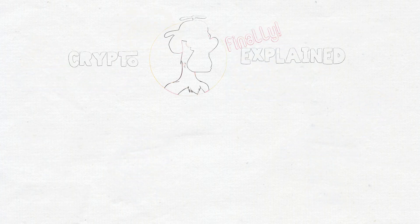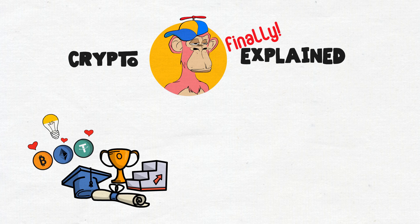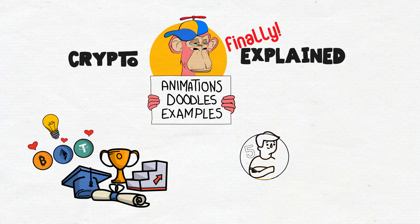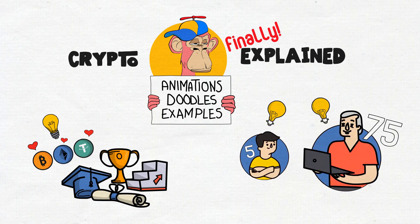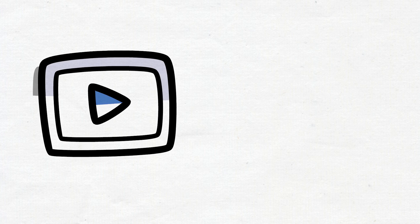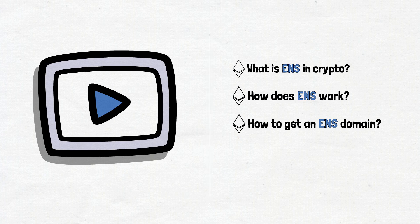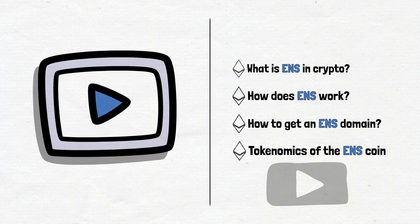Welcome to Crypto Finally Explained, the most crypto-friendly educational YouTube channel for actually learning crypto. Here, I finally explain crypto topics using simple animations, visual doodles, and real life examples, so no matter if you're 5 or 75, you'll be able to understand it. In this video, I will try to shed light on topics like what is ENS in crypto, how does ENS work, and how to get an ENS domain. Moreover, we will look into the tokenomics of the Ethereum name service coin. So, let's get right into the video!